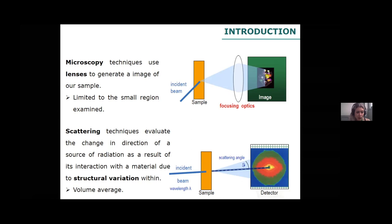Scattering techniques, on the other hand, evaluate the change in direction of a source of radiation as it interacts with the material we are analyzing. We get a volume average of the sample, meaning we can have more representative results on the structure. The complex part is how to analyze the data, but if we are able to analyze our data properly, we can extract a lot of structural information that is going to be representative.